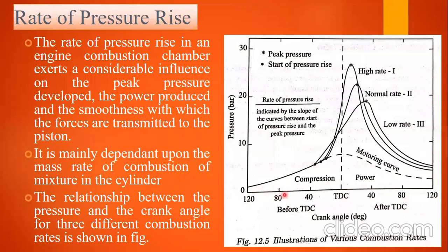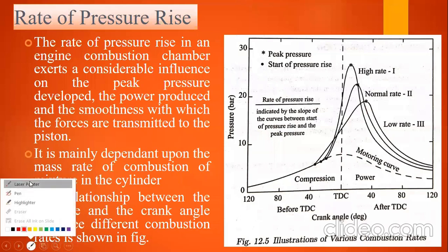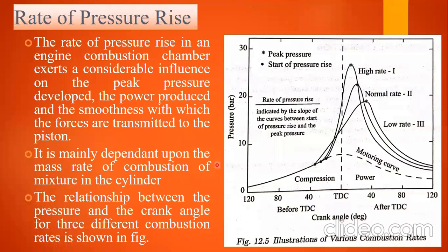We have taken three different conditions, that means three cases. Based on these three cases we need to decide which one is perfect for us. First of all, we are going to take three types of combustion rates: one is low rate, the second one is normal rate, and the third one is high rate.